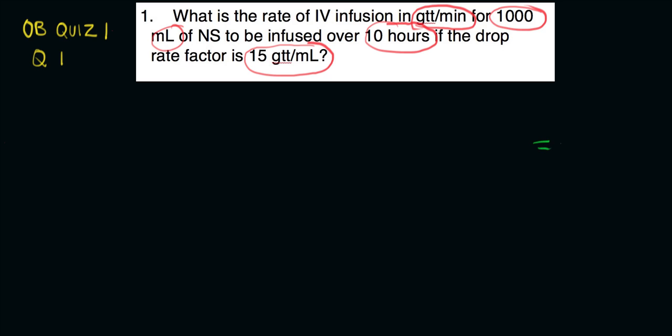Your final unit is going to be GTTs per minute. Let's give ourselves a little visual. GTT will always be a numerator and minute will always be a denominator.